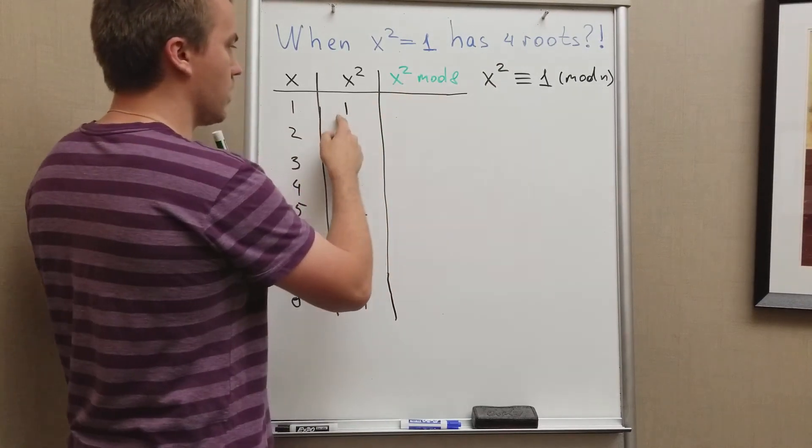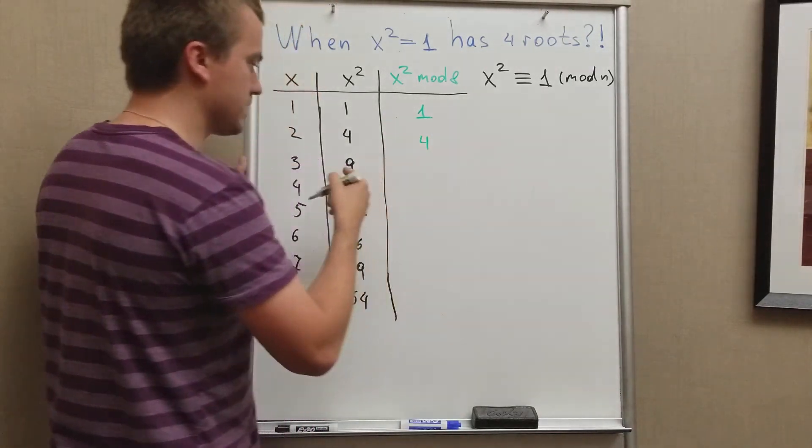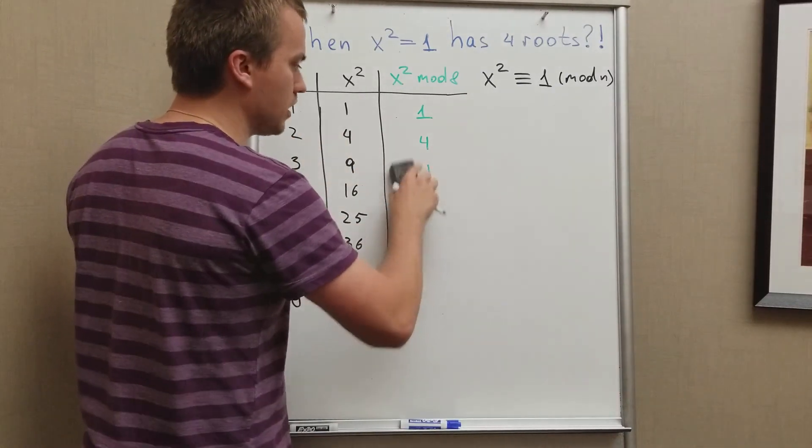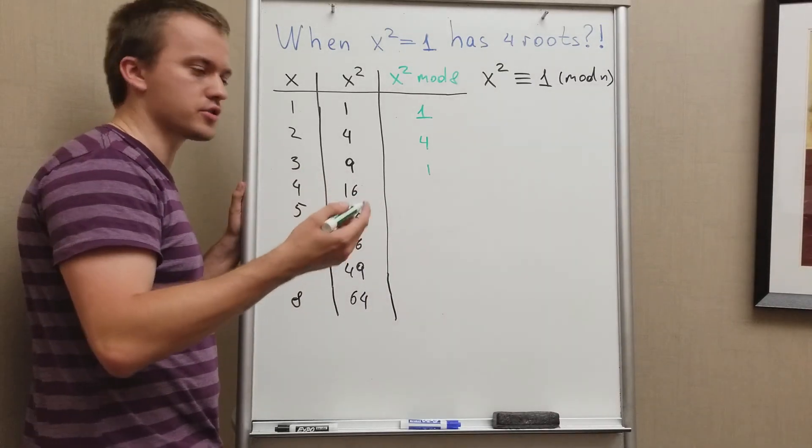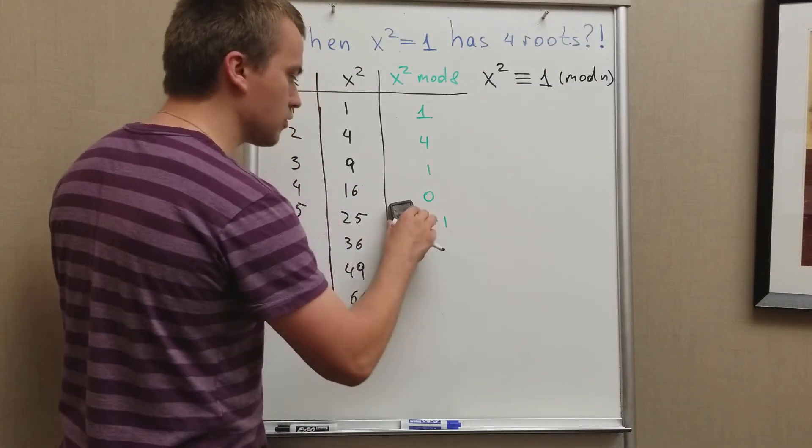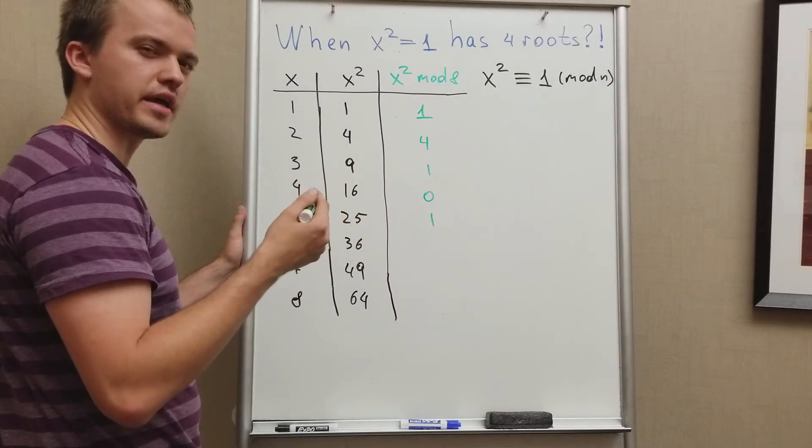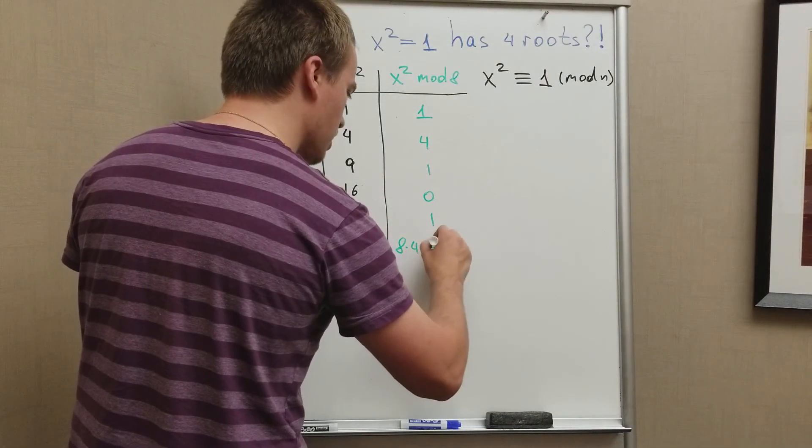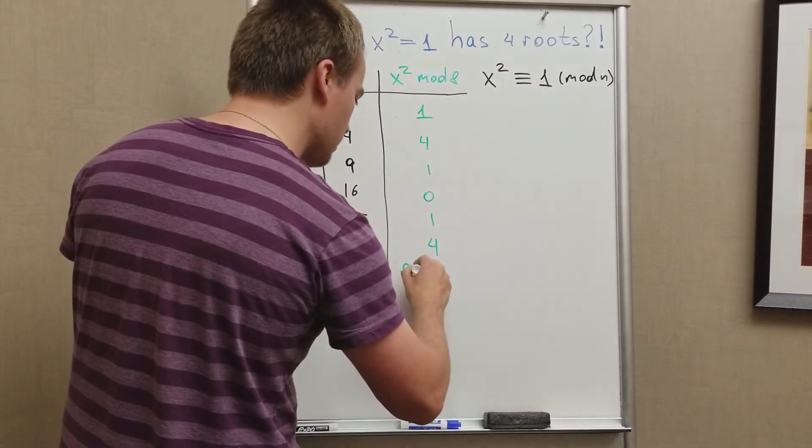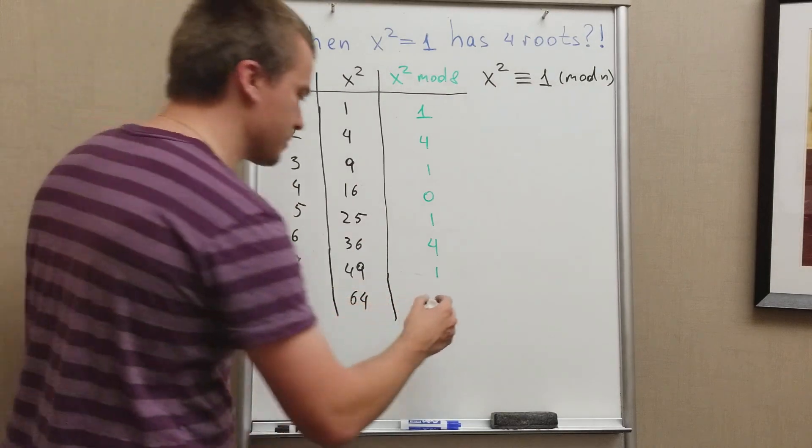By definition of congruence, it means I want to find all remainders of all these numbers when I divide by 8. So 1 is not divisible by 8, so the remainder is 1. 4 also counts as a remainder. But since 9 can be written as 8 plus 1, the integer part I'm going to throw away, so I'm left only with 1. 16 is divisible by 8, so there's no remainder, 0. 25 is 8 times 3, which is 24, plus 1, so I'm left with 1. 36 is 8 times 4, which is 32, plus 4, so I'm left only with 4. And 49 is 8 times 6 plus 1, so I'm left only with 1. And 64 is 8 times 8, divisible by 8.